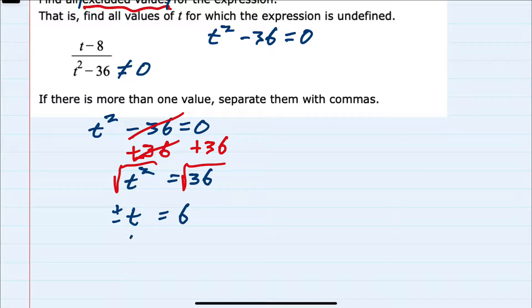So our values for t are that t is either a positive or a negative 6.